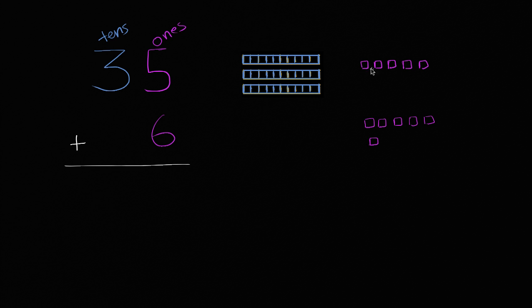We see them right over here, one, two, three, four, five. Now we want to take that 35, or those three tens and five ones, and add six, six ones. The six is in the ones place.